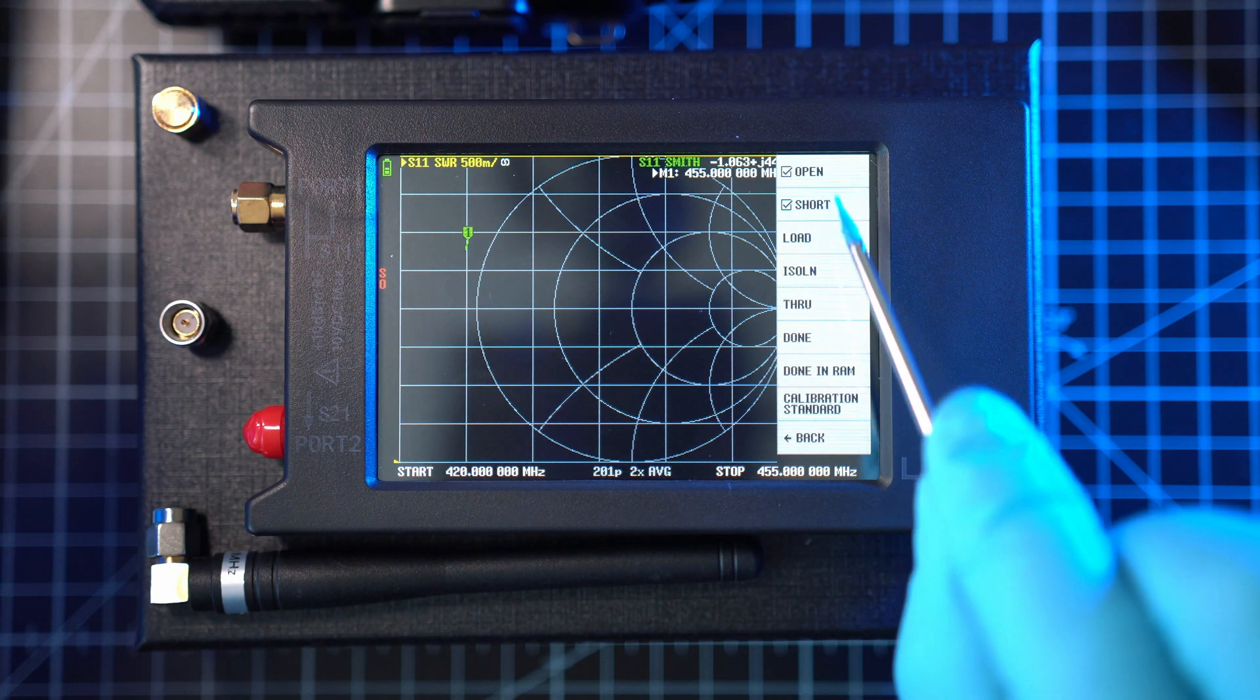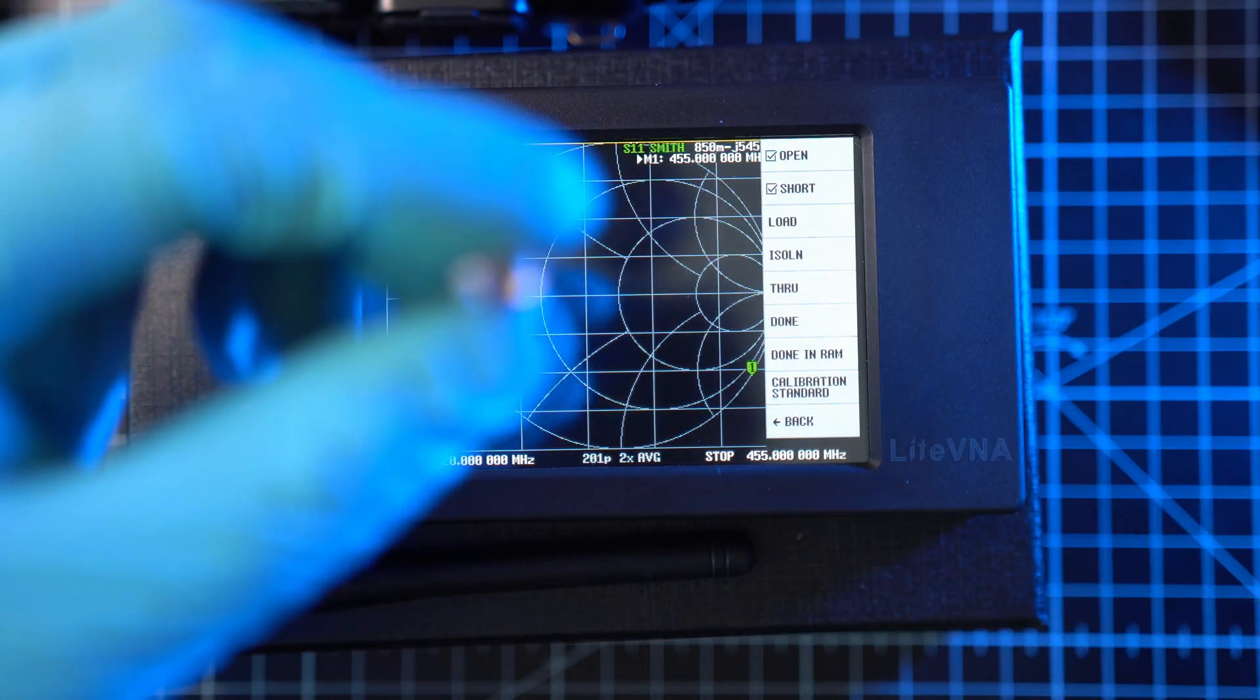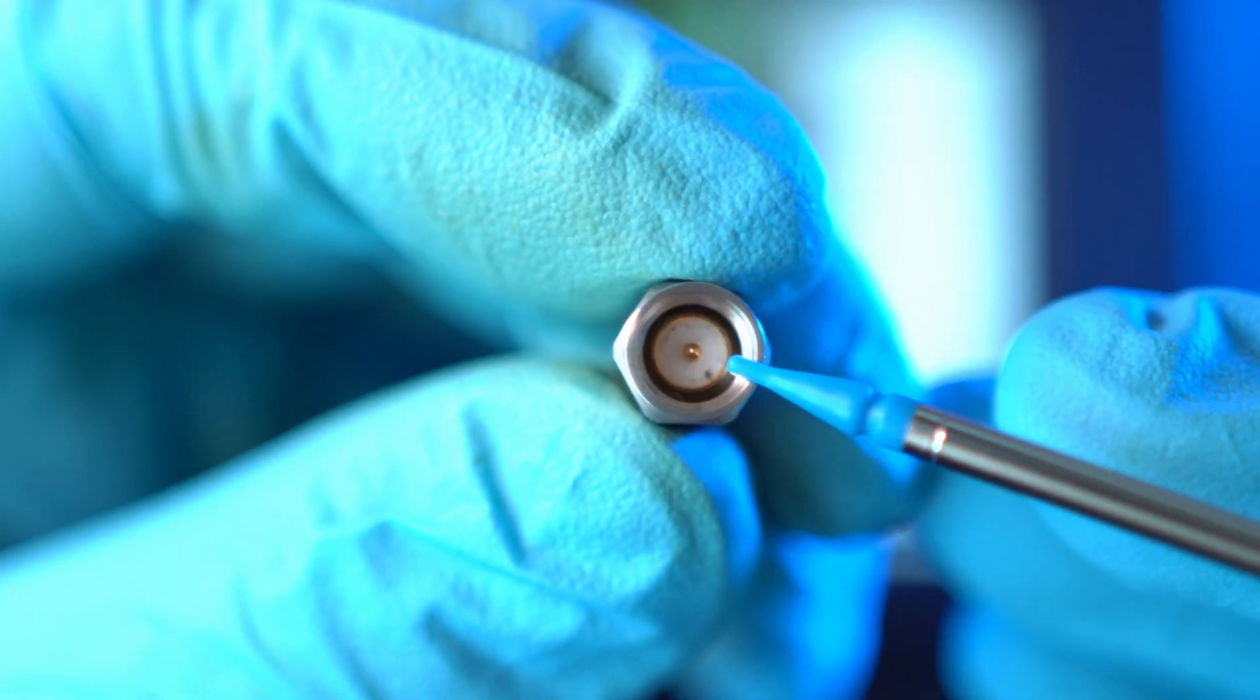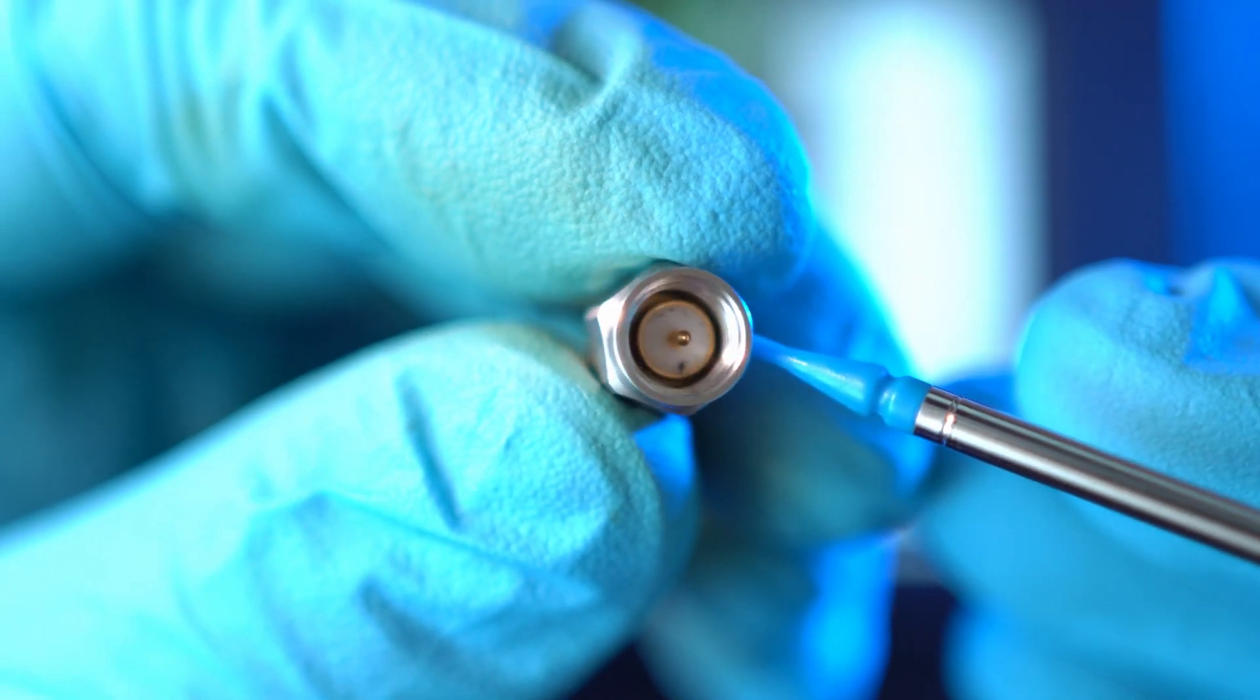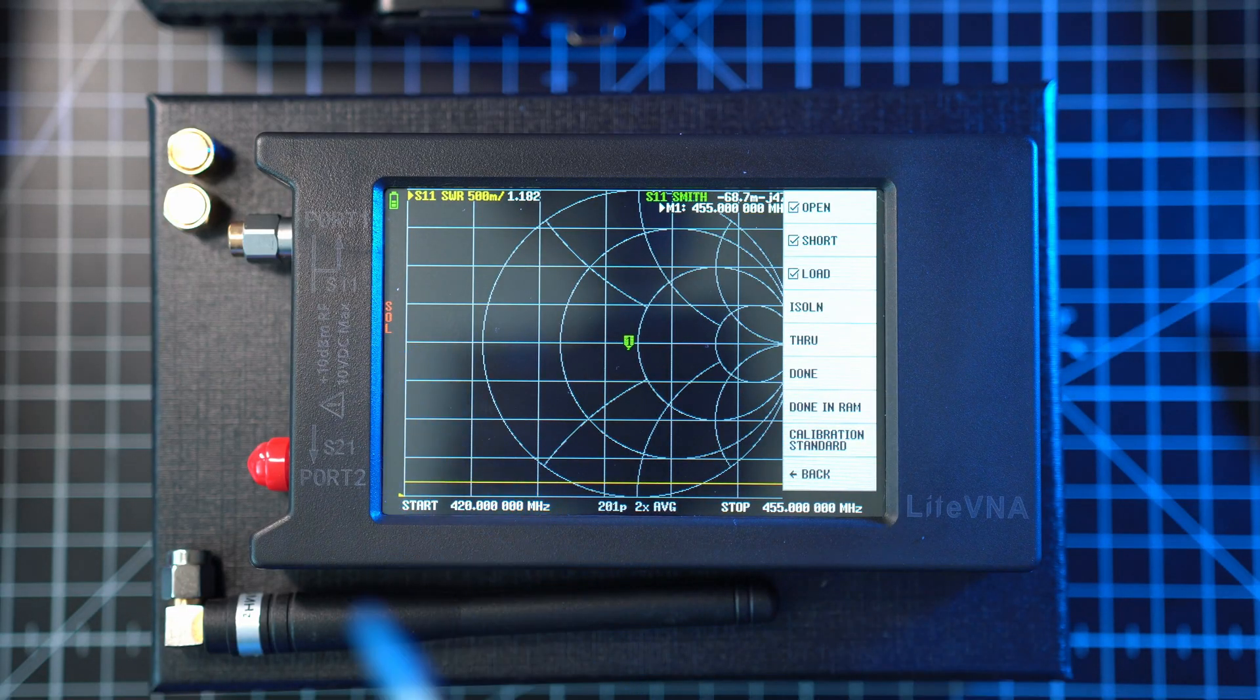Now we have done two out of three. Last is load. The load SMA plug looks like a regular connector as it has a 50 ohm resistor inside. Screw it on, hit load, and the final check mark and letter L appear.